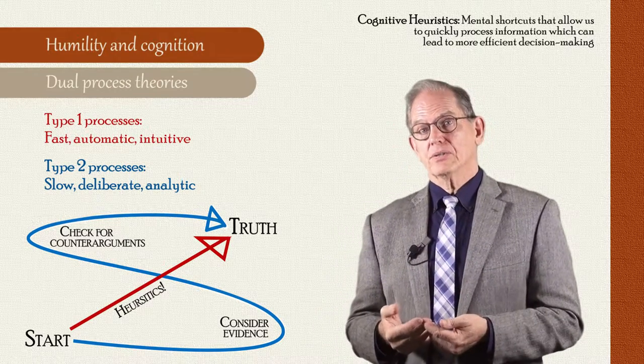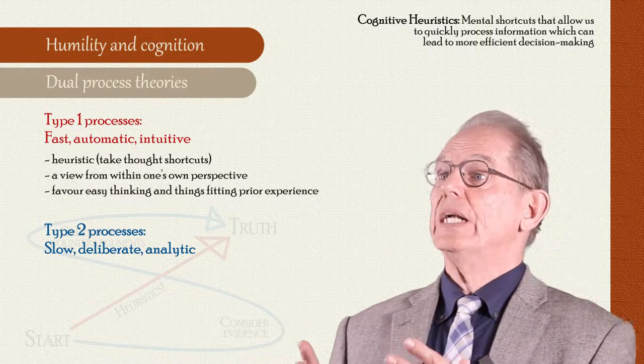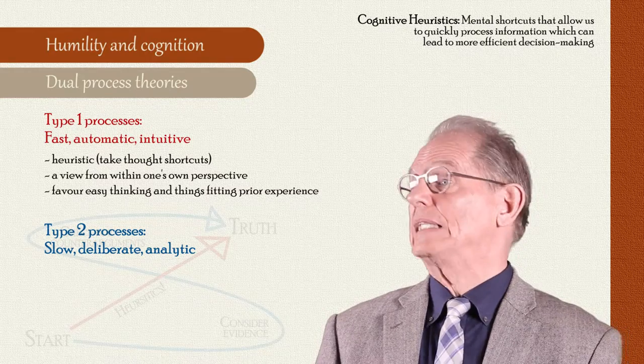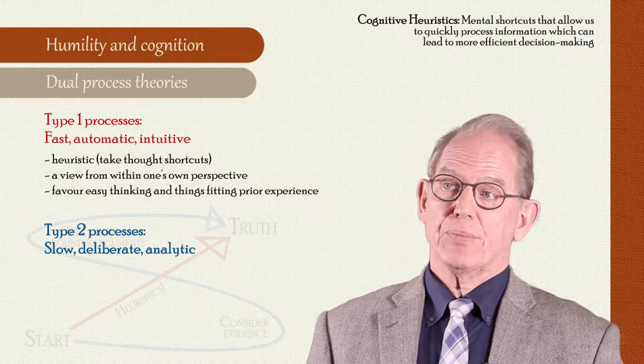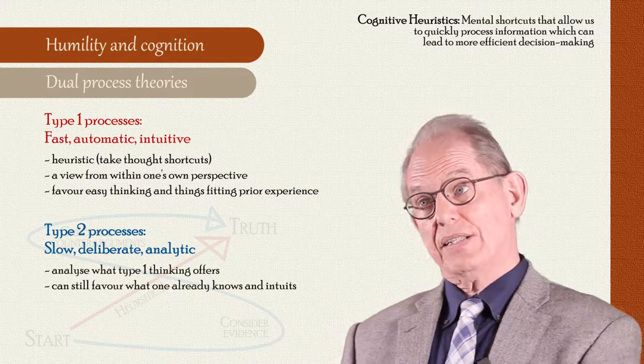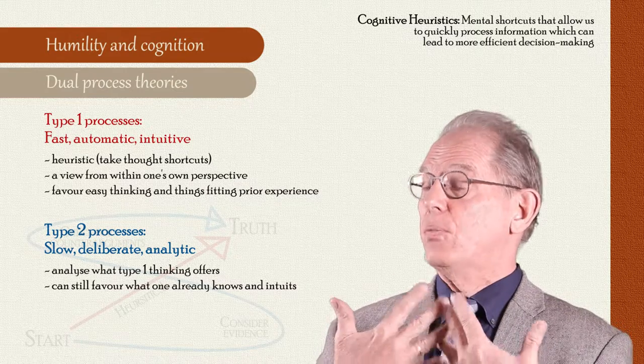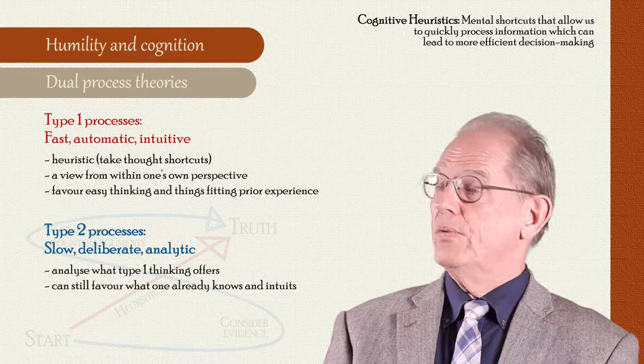The heuristics of Type 1 thinking evaluate ideas from within one's own perspective and therefore favor ideas that are readily accessible, easily discerned, and conform to prior experience. Type 2 processing, though it is more deliberate and usually analyzes what Type 1 thinking offers, can also favor what one already knows, believes, and intuits, even as it decouples from Type 1 representations.